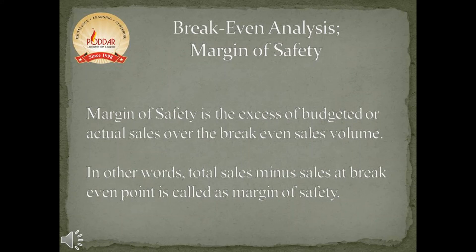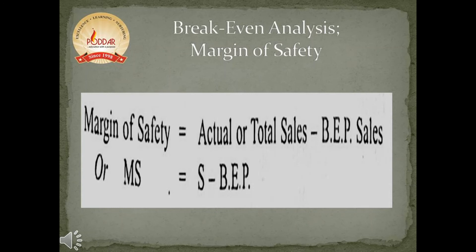The last method in break-even analysis is margin of safety. Margin of safety is the excess of budgeted or actual sales over the break-even sales volume — in other words, total sales minus sales at break-even point. Margin of safety is calculated as sales minus BEP, and we use this formula when sales and BEP values are given.